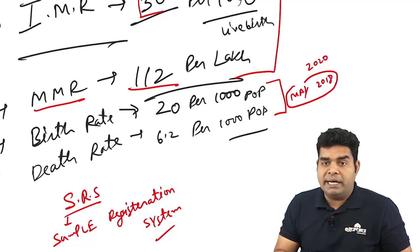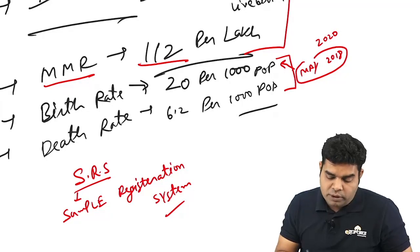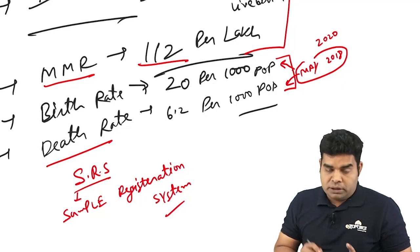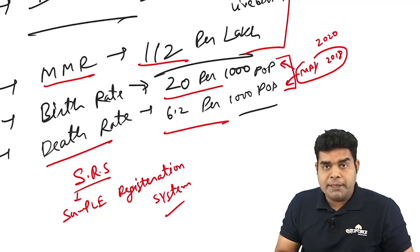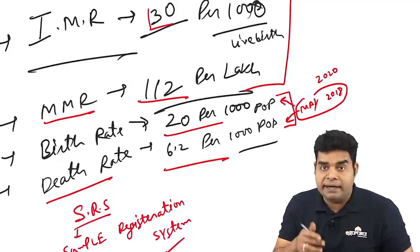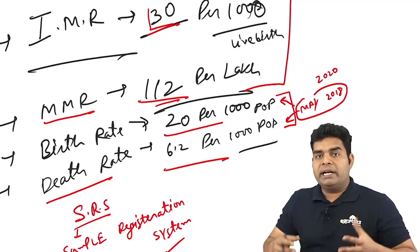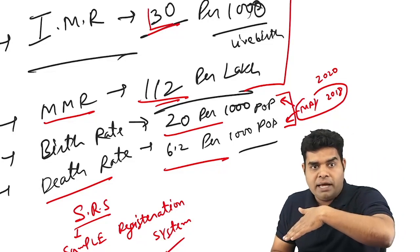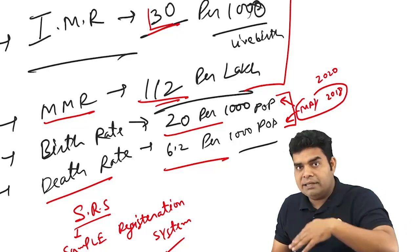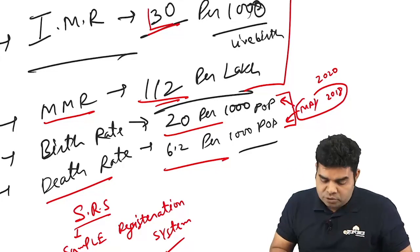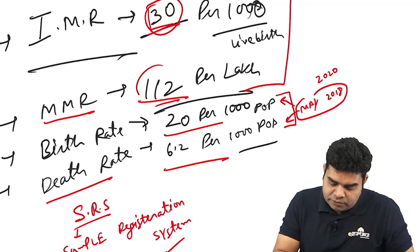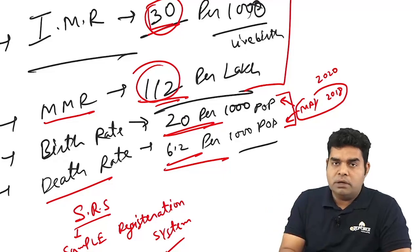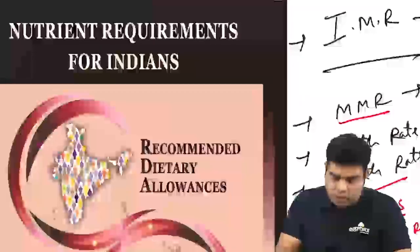In May 2018, the birth rate was 20 per thousand and death rate was 6.2 per thousand. For updated IMR and MMR, these are calculated internationally by knowing the gradient decrease. So: IMR is 30, MMR is 112, birth rate is 20, and death rate is 6.2 per the May 2018 SRS data.